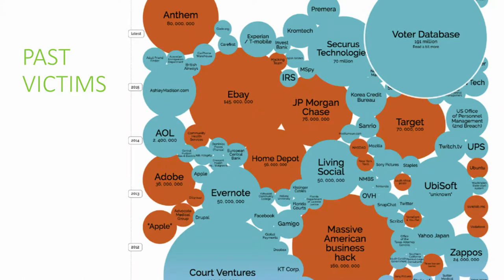I like this graph because it shows a diversity of sites that are getting compromised. But what's different here is that it doesn't matter the number of records — it's what's in those records. As a hacker, I'd rather have 10,000 great records than 25 million records that just have usernames and passwords. The Equifax breach had social security numbers — it's an identity theft gold rush.